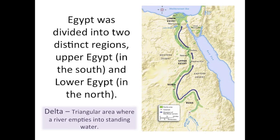About 3100 BC, King Menses united the two regions and made Egypt the world's first unified state. The river served as a highway and a trade route to Africa, the Middle East, and the Mediterranean.